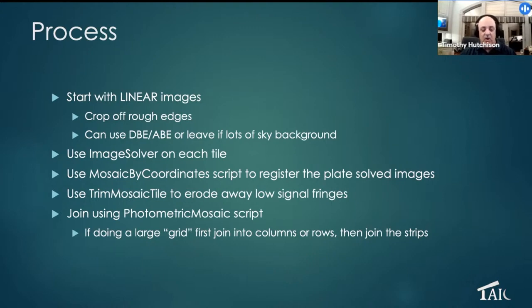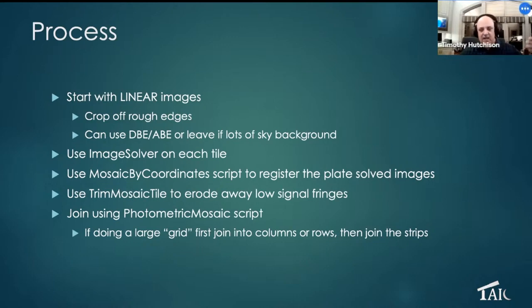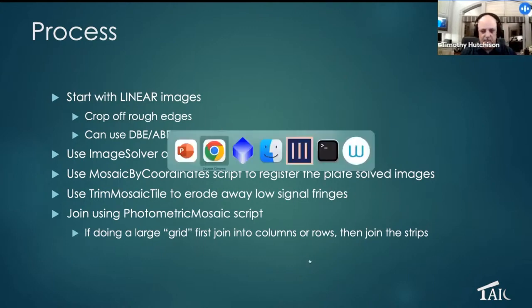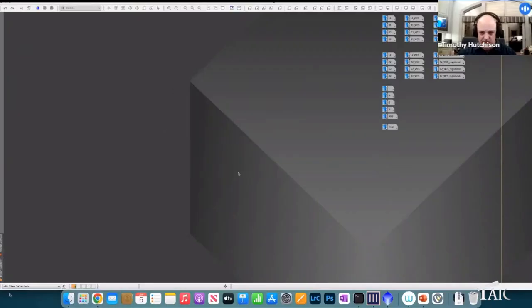For large mosaics, you join either columns or rows first and then run the individual script. So for a nine-by-nine, you might do three rows first and then put the individual rows together. Now let's take a look at it.